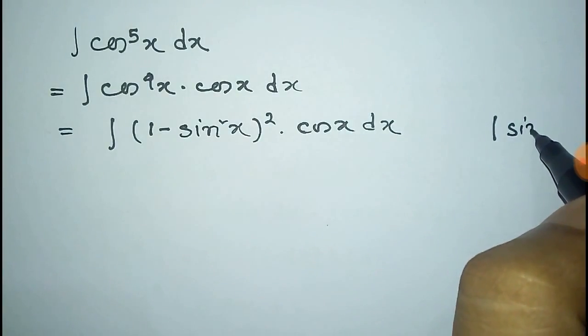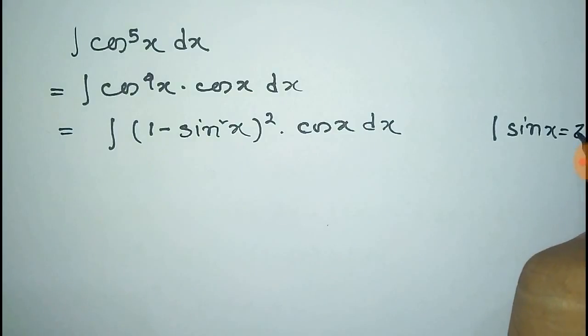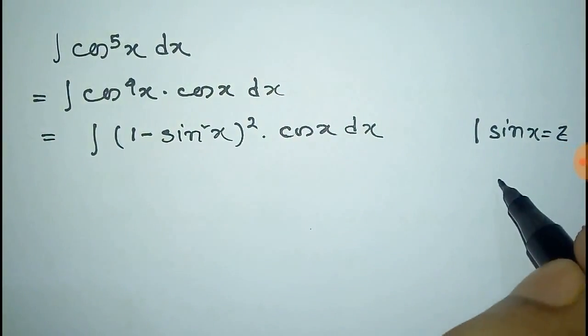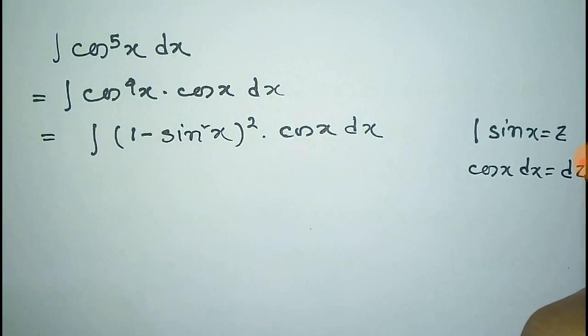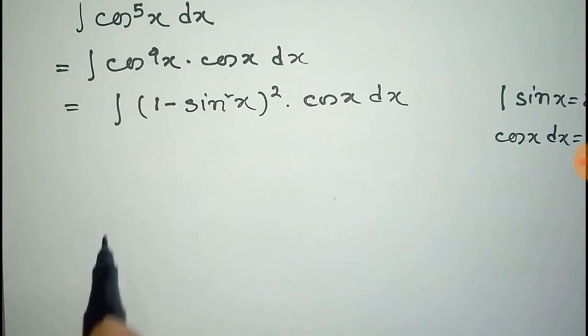Now we consider that sin x is equal to z. So the derivative of sin x is cos x dx is equal to dz.